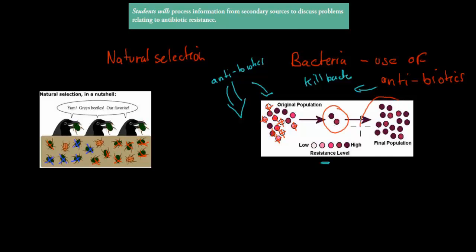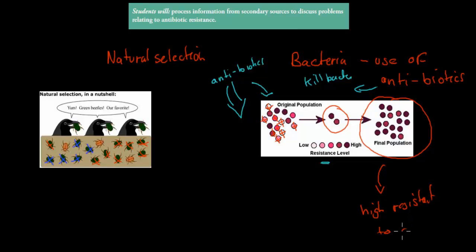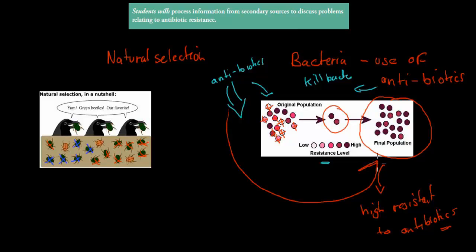The problem is the final population — what we have left over — they all have high resistance to the antibiotics, so they're resistant to antibiotics. That's a problem because we could kill the bacteria initially, but if we try to use the same antibiotics on this sample, we're going to find they're less effective. Most of them will actually not die because they're resistant. So natural selection works for general animals and insects, but also for bacteria.